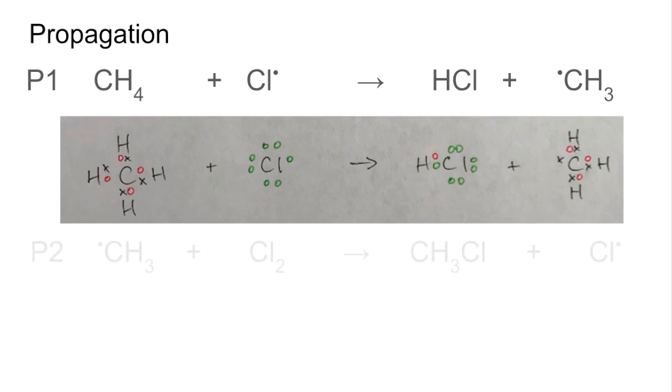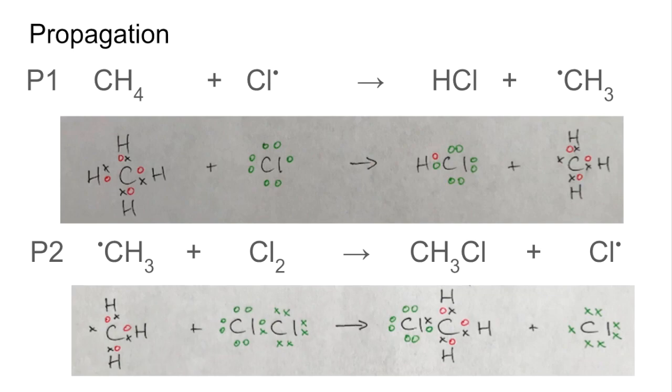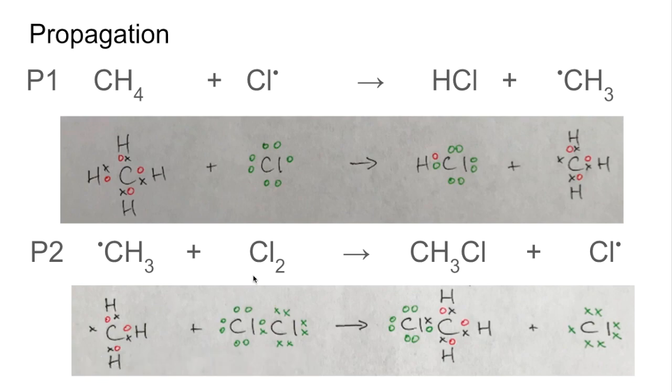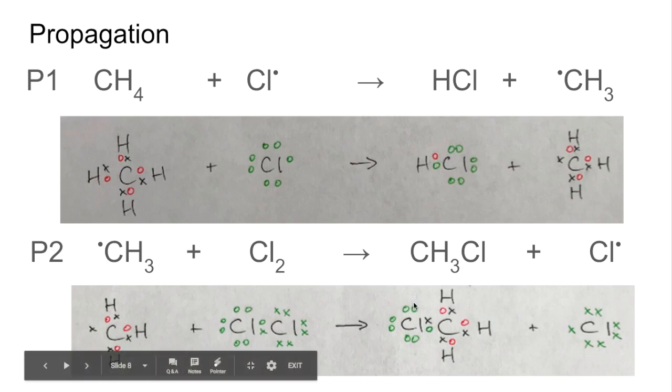So if we look at P2 now, the methyl radical reacts with some chlorine that hasn't been broken and forms chloromethane and a chlorine radical. And the dot and cross diagram hopefully makes that nice and clear. We're wanting to pair that electron up. So the way it does it is it gets hold of one of the chlorine atoms from the molecule and takes its electron as well.